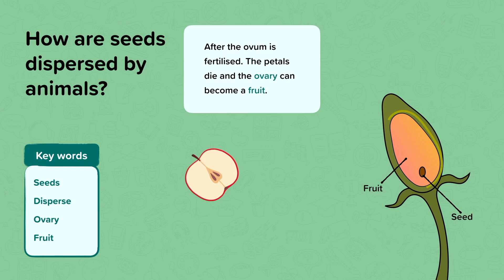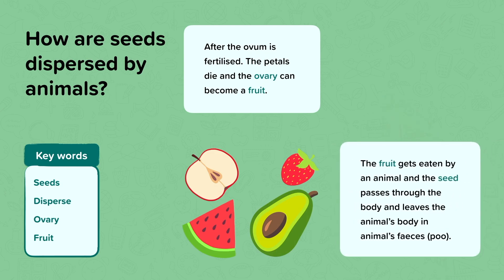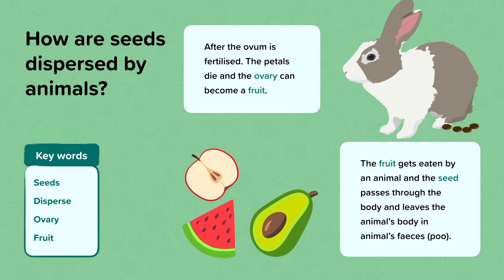Here we can see examples of fruits with their seeds on the inside and the outside. The avocado seed is very large in the middle, whereas a watermelon has lots of smaller seeds inside it. These fruits can then be eaten by an animal and the seed will pass through the body of the animal, leaving it in the animal's faeces or poo. This allows the seed to be spread to different places.